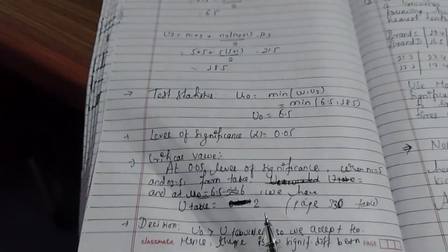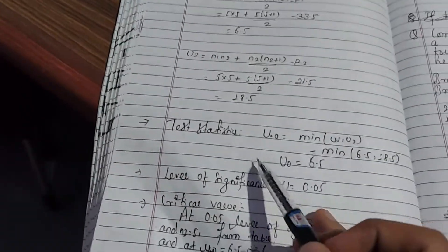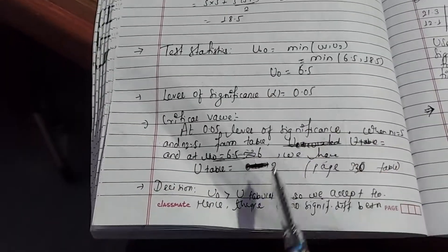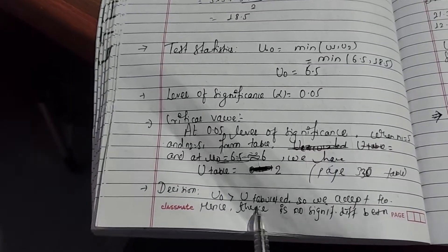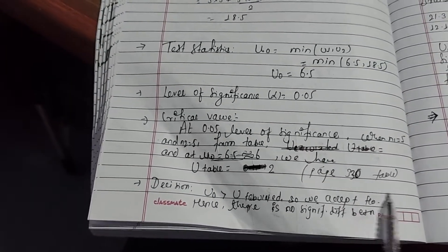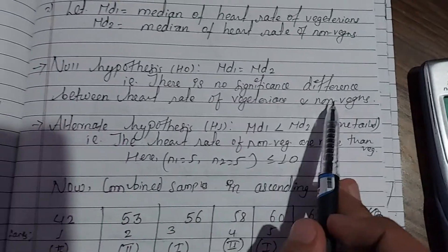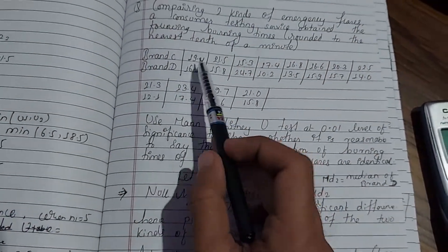Since our calculated U value of 6.5 is greater than the tabulated value of 2, we accept the null hypothesis H0. Therefore, there is no significant difference between the heart rate of vegetarians and non-vegetarians. This concludes our example.